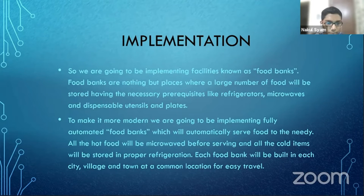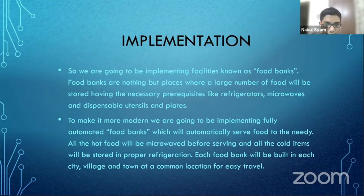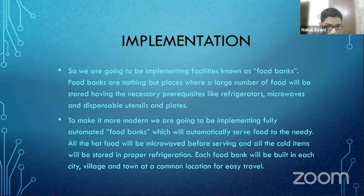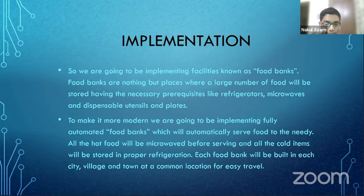The implementation involves establishing facilities known as food banks — places where a large amount of food will be stored, with necessary equipment like refrigerators, microwaves, and disposable utensils and plates. With the coming age of technology, I would like to make it more modern by implementing fully automated food banks which will automatically serve food to the needy. Hot food like rice and curry will be microwaved, and cold items like salad will be properly refrigerated. Each food bank will be built in every city, village, and town at common locations so that each person can easily access food.